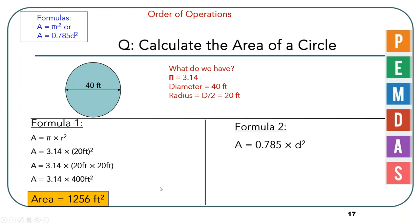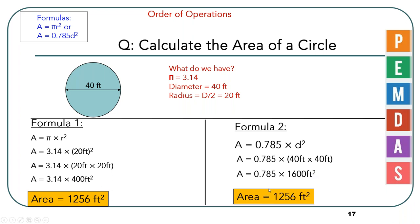Using the second formula gives the same result — it just uses diameter instead of radius. Area = 0.785 × (40 ft)². Many people make mistakes here by using the wrong value. 40 × 40 = 1,600 square feet. Multiplying: 0.785 × 1,600 = 1,256 square feet — the same answer. Know how to use both formulas and go with whichever you're most comfortable with, then follow the order of operations.